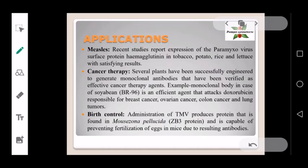Edible vaccines are also effective in the treatment of measles, using tobacco, potato, rice, and lettuce with satisfying results. In cancer therapy, monoclonal antibodies verified as effective cancer therapy agents are generated. For example, in soybean, BR96 is an efficient agent that attacks doxorubicin, responsible for breast cancer, ovarian cancer, colon cancer, and lung cancer.